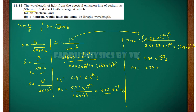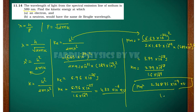Divide by 1.6 × 10⁻¹⁹ to convert to electron volts. This gives 2.36875 × 10⁻⁹ electron volts. That is the complete solution.